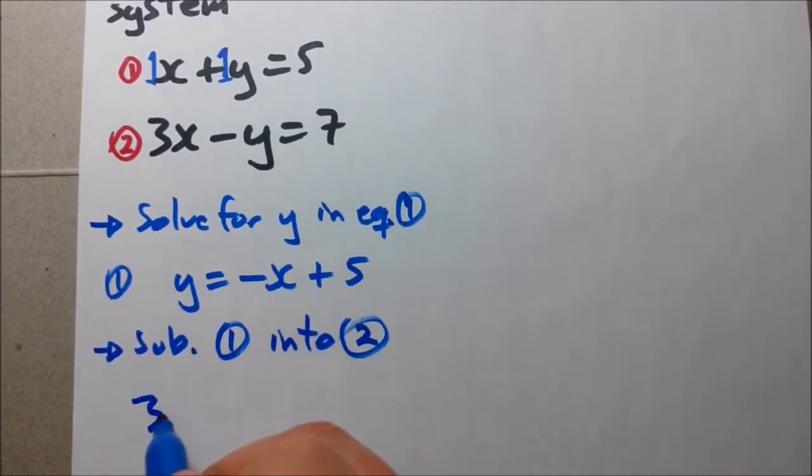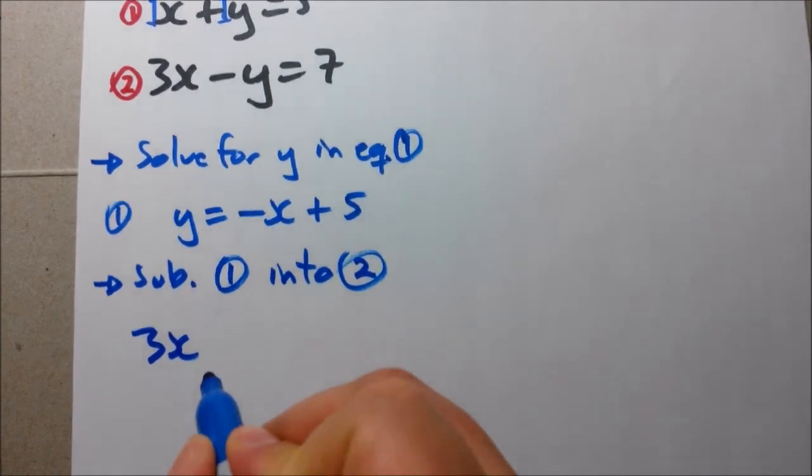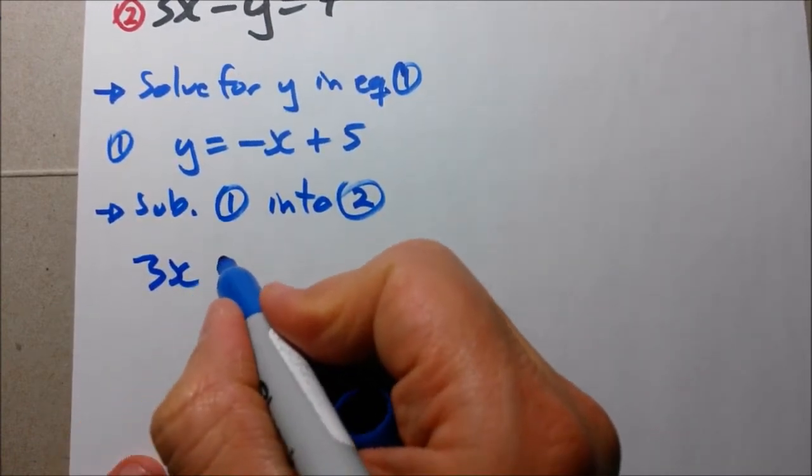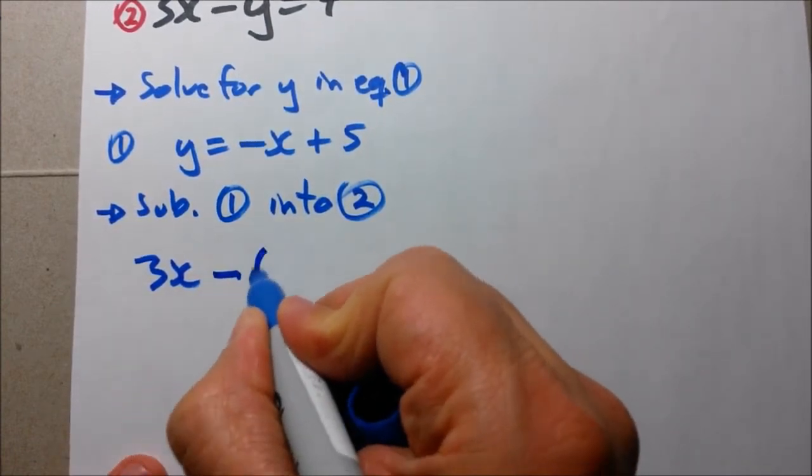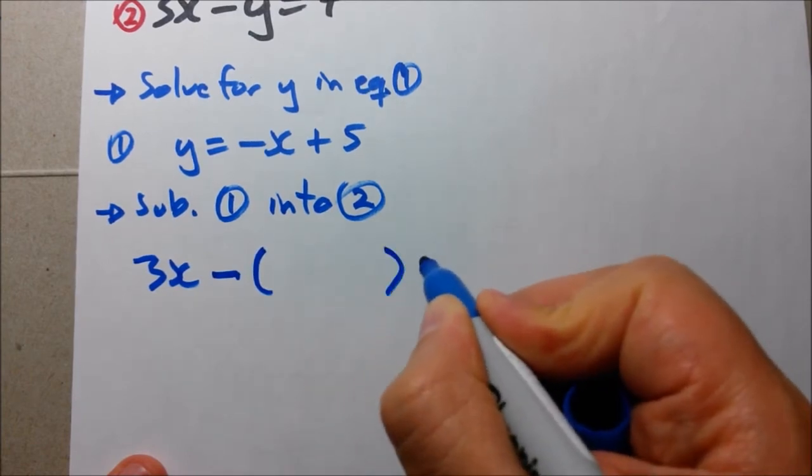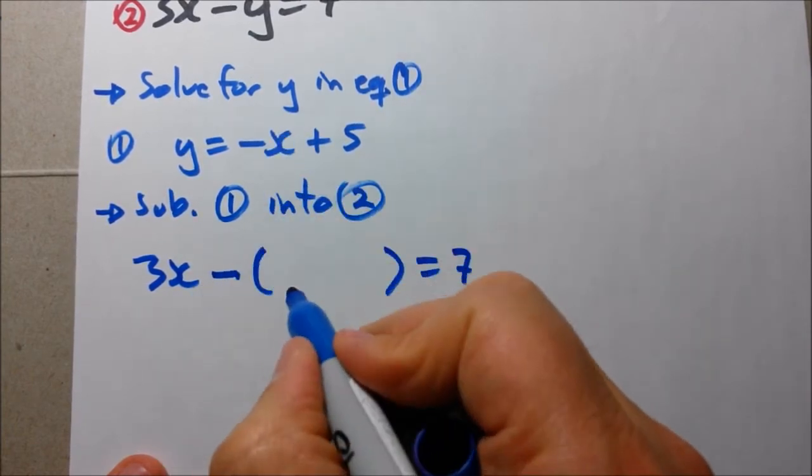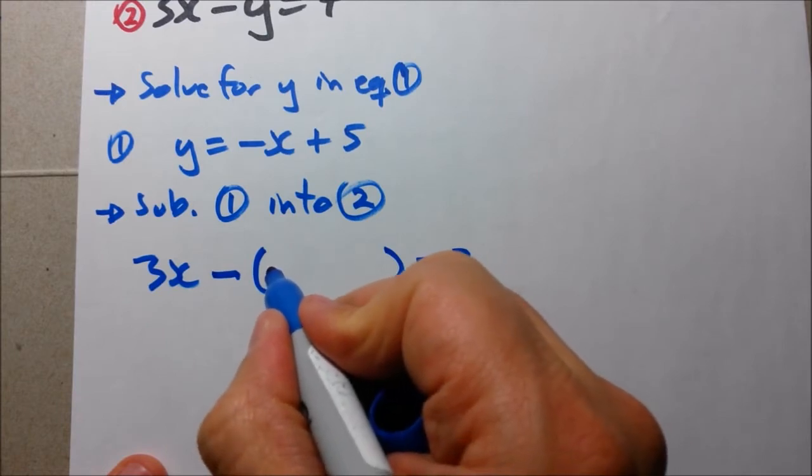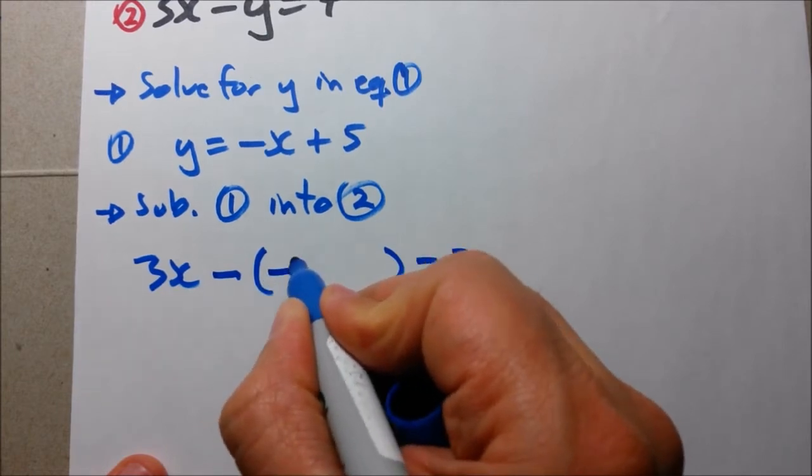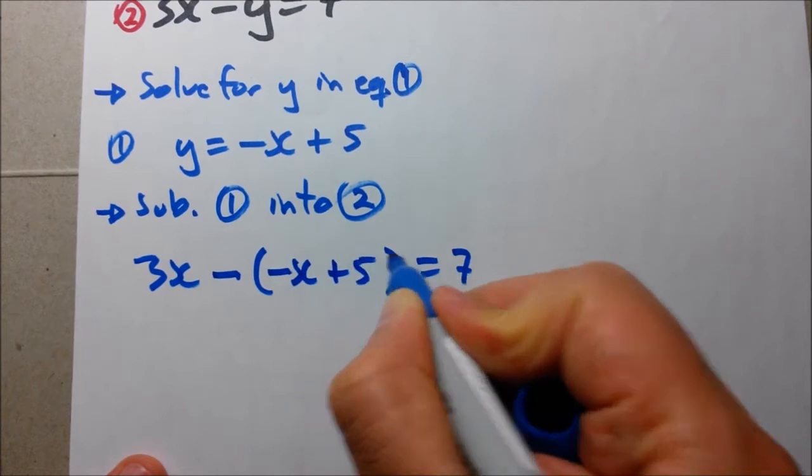So we have 3x. Let's move this up a little more. Now, 3x minus, open brackets here, close bracket, equals 7, right? So 3x minus y equals 7. So we write our y now, minus x plus 5.